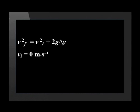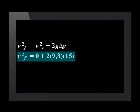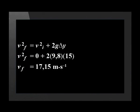We determine the final velocity by applying the equations of motion. The initial velocity is 0 m/s, gravitational acceleration is 9.8 m/s², and the height is 15 meters. Substituting correctly into the appropriate equation, the final velocity is 17.15 meters per second.